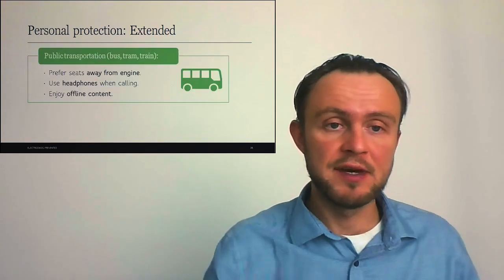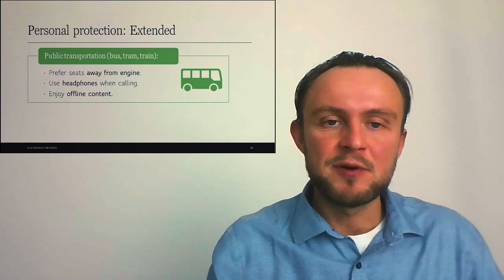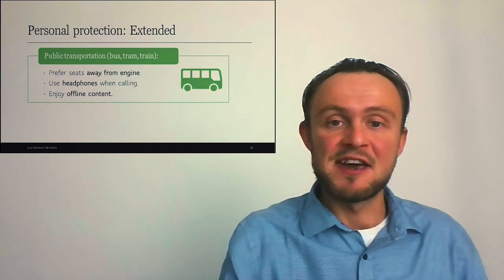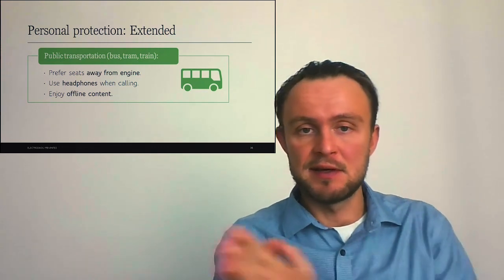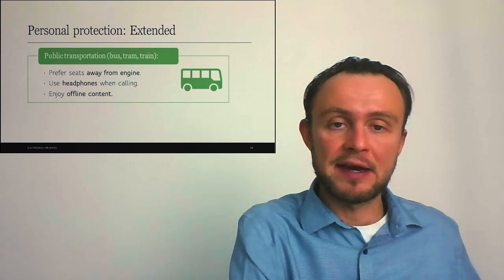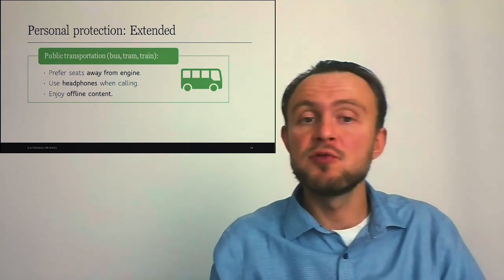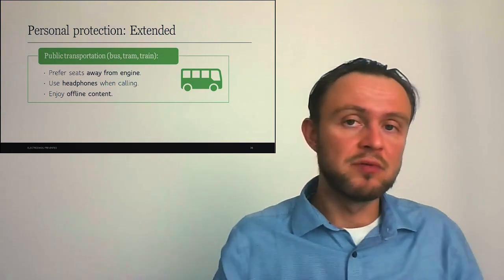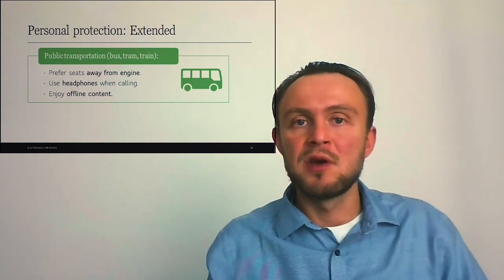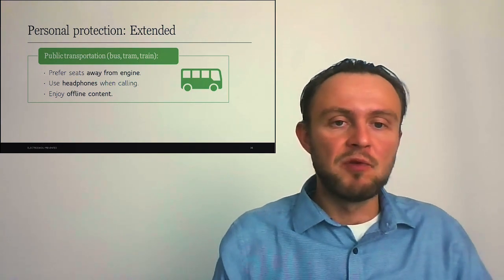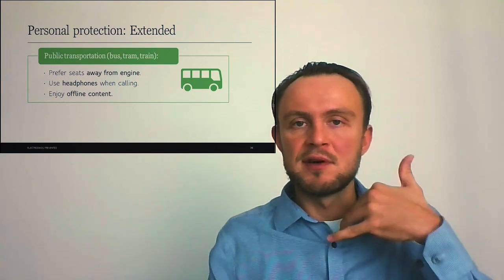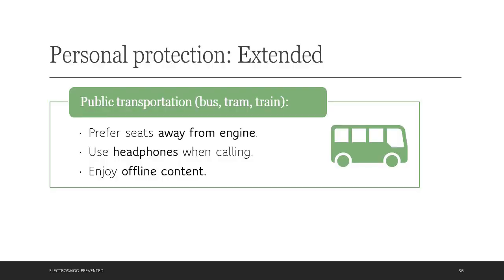We should also place fridge away from places where we spend most time, like the bedroom or living room. In public transportation, it's best to prefer seats away from the engine. In case of bus, engine is usually located in the back of the vehicle. We can also use headphones when calling and call only if necessary. If we want to make our surroundings safer, we might use the phone on the side where are less people. We can also enjoy offline content. So we can pre-download podcasts and then listen them during the travel without connection to wireless networks.